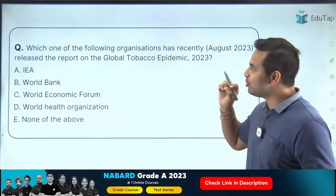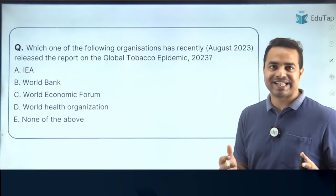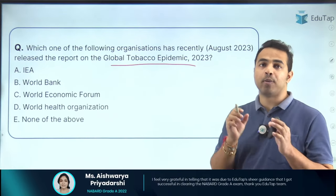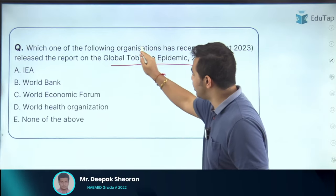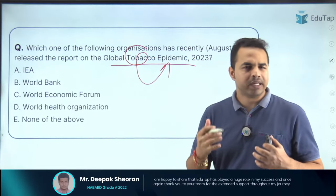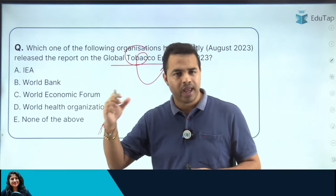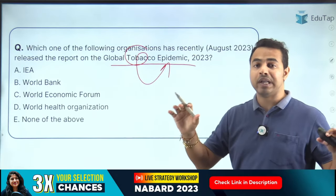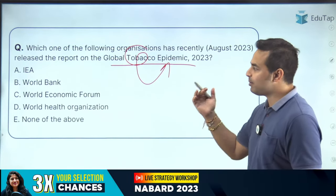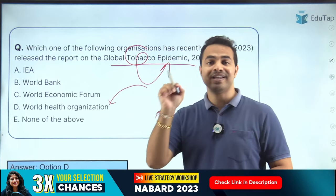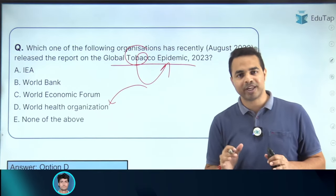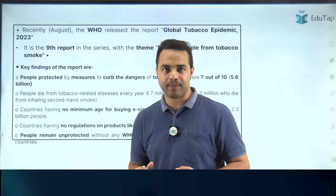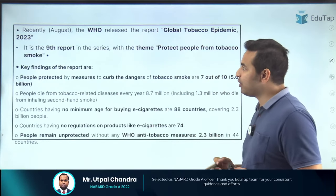The next report is the Global Tobacco Epidemic 2023. This tobacco report is related to health impacts on humans, so the releasing body is the World Health Organization (WHO). You can easily correlate topics with their releasing bodies in this manner. Let's see the key findings: the theme was 'Protect People from Tobacco Smoke'.